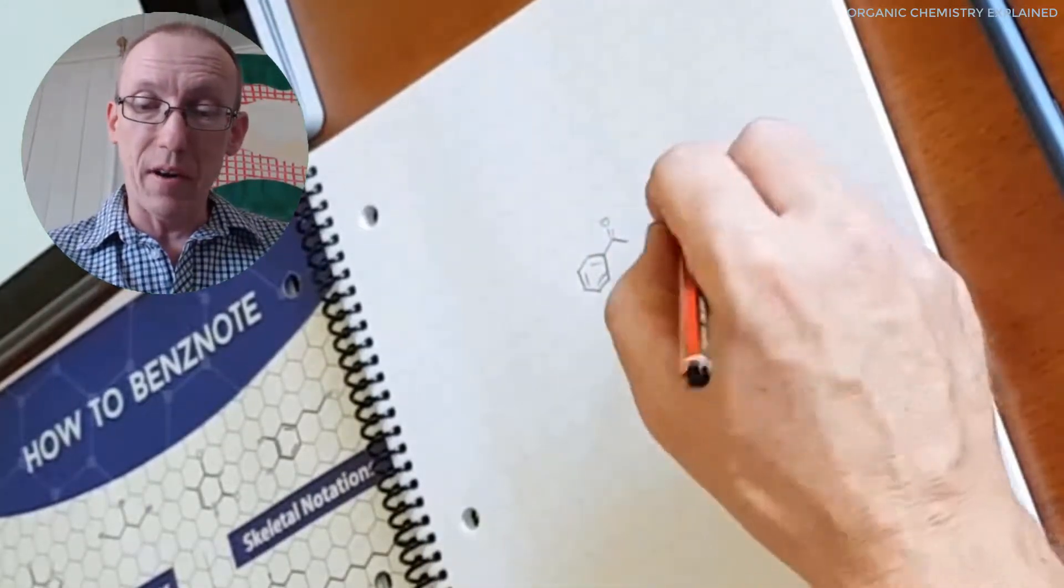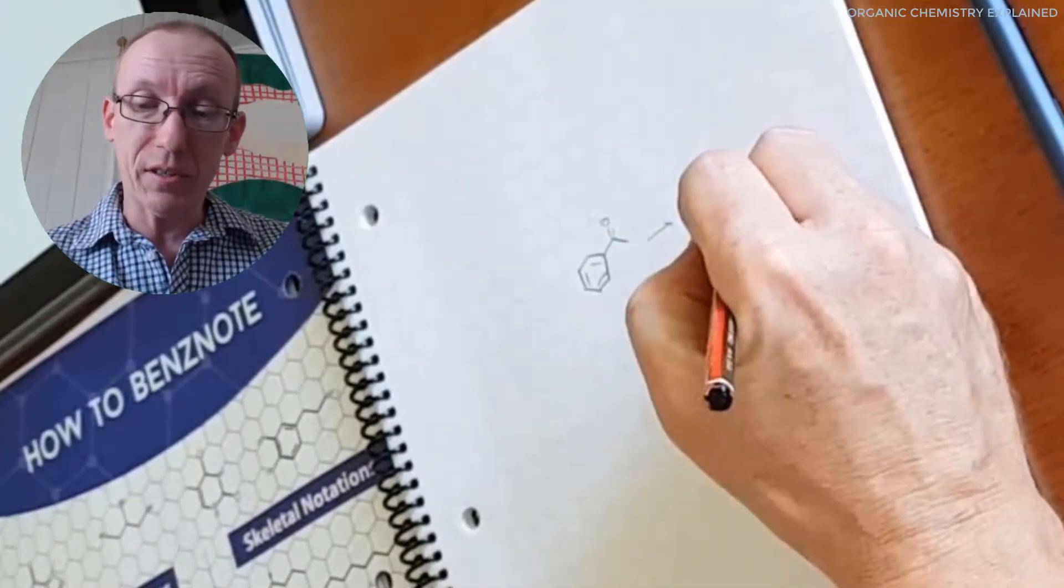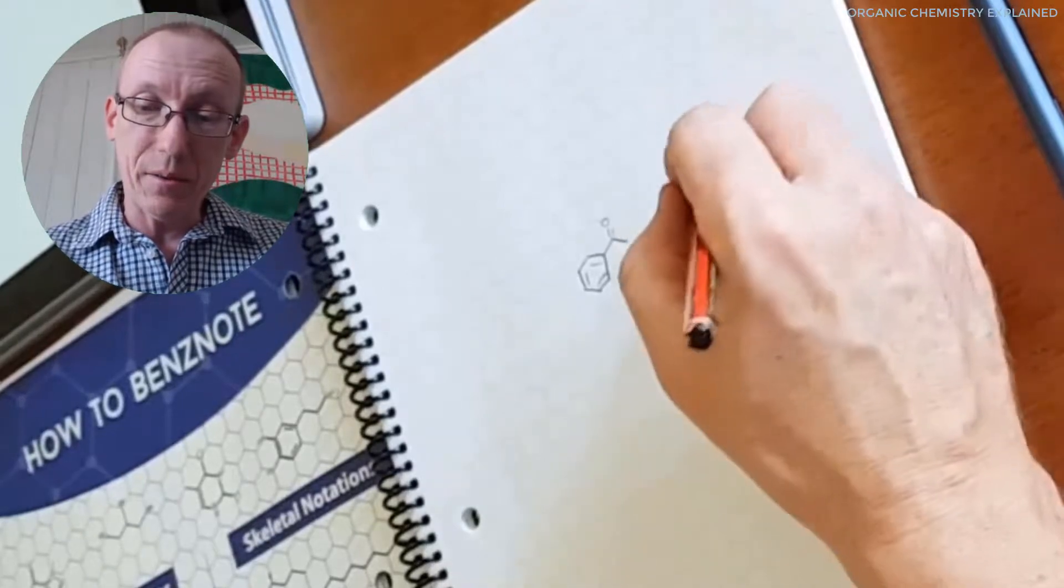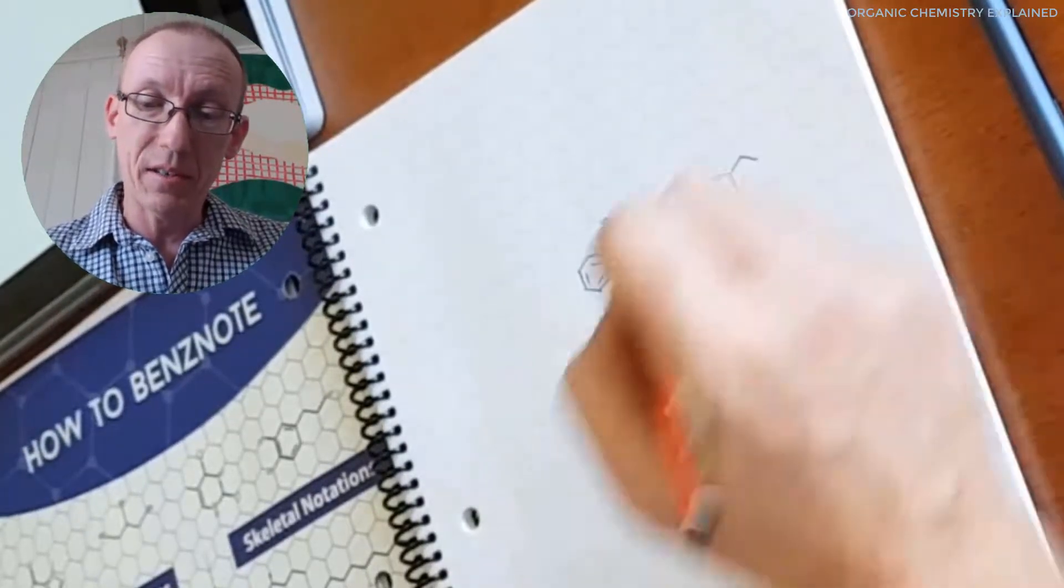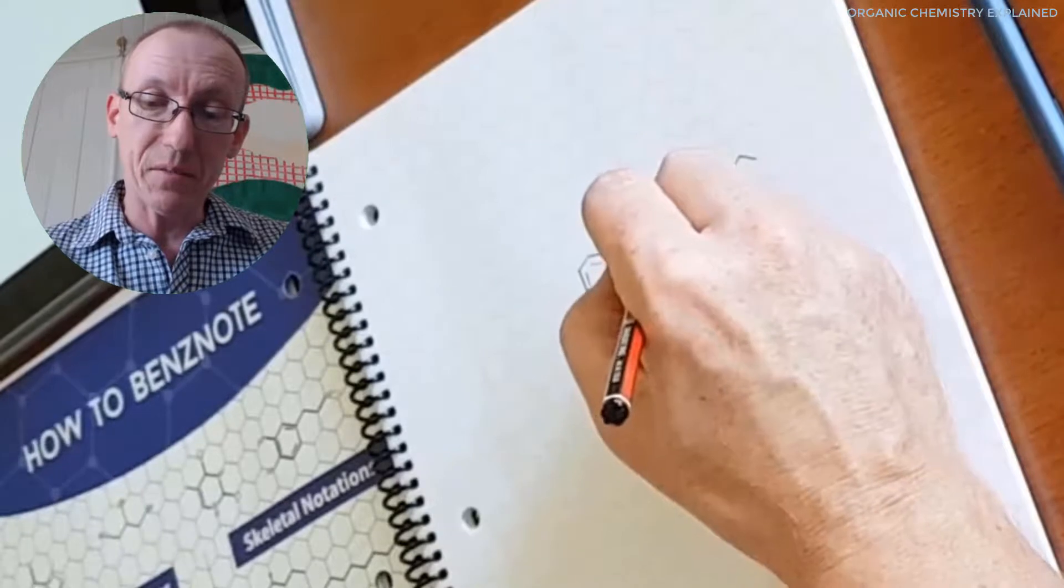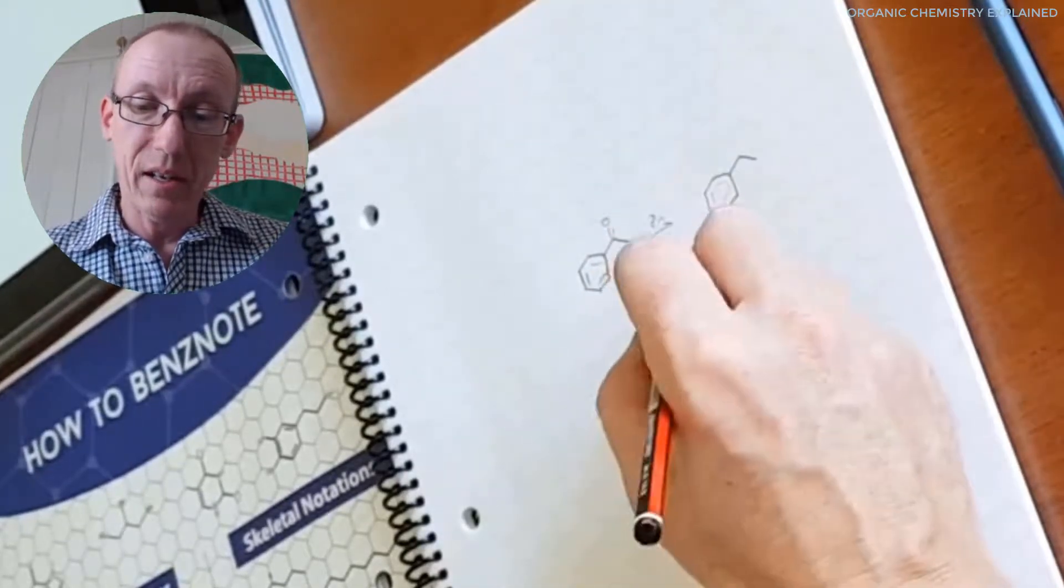Okay, so we can easily draw our organic structures like so and what are we going to do? Maybe a Clemonson reduction. Make that go down to this and do zinc and HCL and so on.